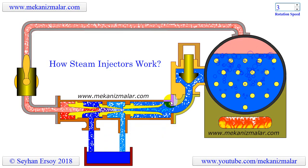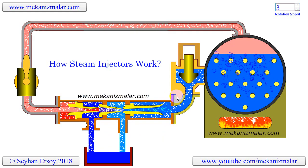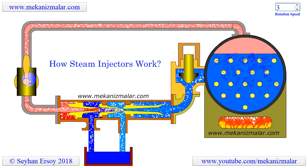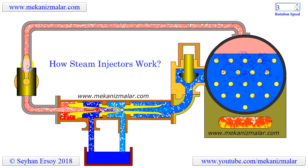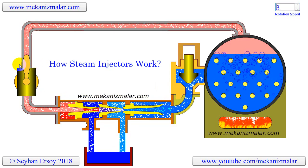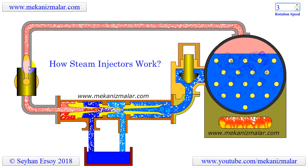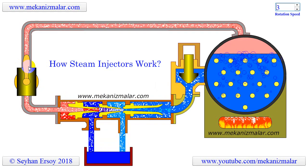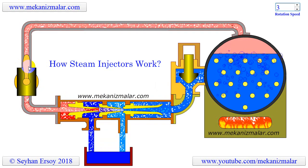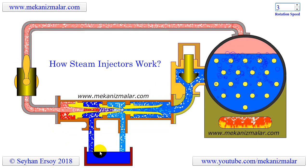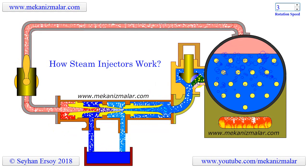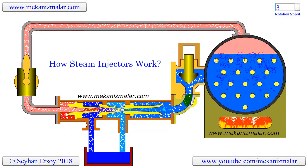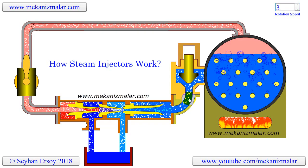The steam injector's operation will be interrupted by turning the valve, shown here, manually or automatically off. Turning off this valve will cut the steam flow to the injector, and in turn cause water flow from the reservoir to stop. During this time, the check valve, shown here, will prevent the boiler water from escaping to the reservoir.